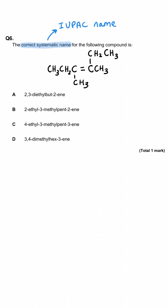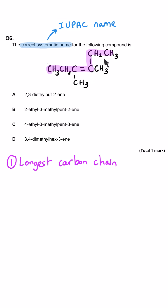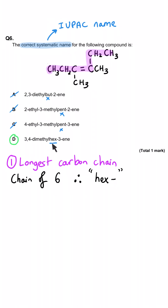This question is asking us for the correct systematic name for the following compound. The first thing we must do is work out what the longest carbon chain is. We could easily be tempted to just go straight across the middle and count five — that's why two of the options have 'pent.' However, if we work our way left to right and then go upwards and then right again, we get a chain of six carbons. Six carbons is 'hex,' so our answer is going to have 'hex' in it, and in fact D is the only option with 'hex' as part of its name. The other options have 'pent' or fewer, and we know they're wrong because there's a longer chain than five.